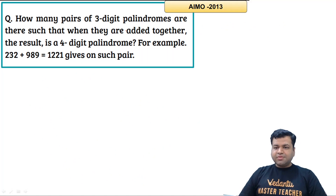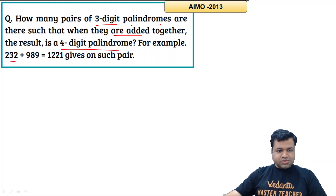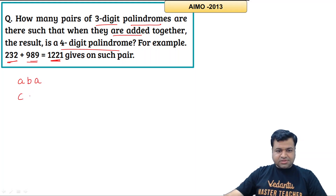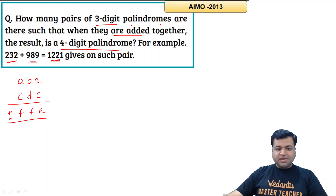The question says: how many pairs of three-digit palindromes, when added, give a four-digit palindrome? For example, 232 + 989 = 1221, which is a four-digit palindrome. Let's write the first palindrome as ABA and the second as CDC. If their sum is a four-digit palindrome, let's call it EFFE. When two three-digit numbers are added and the result is four digits, E must be 1.